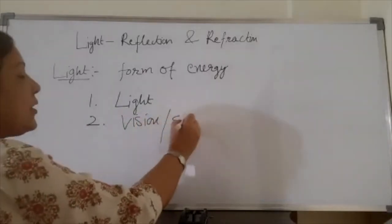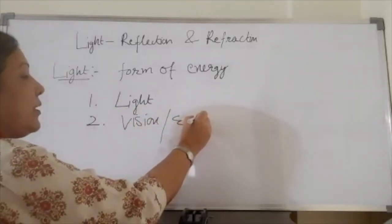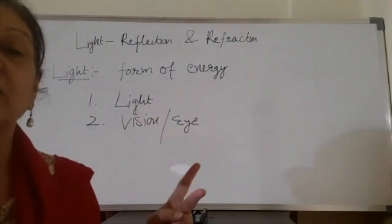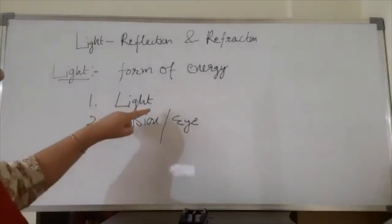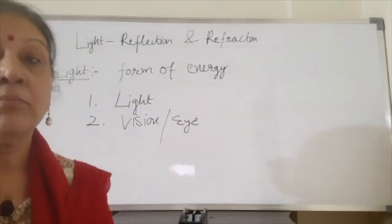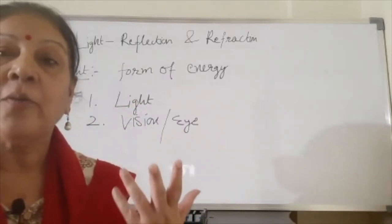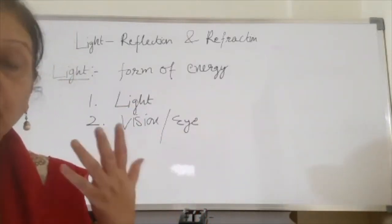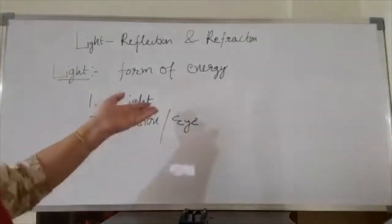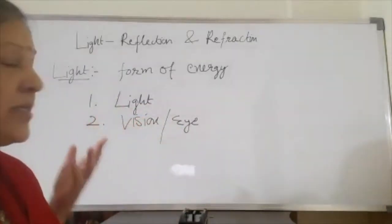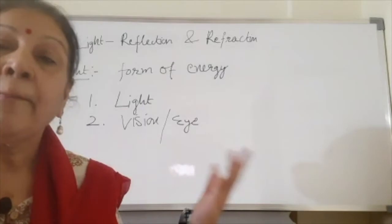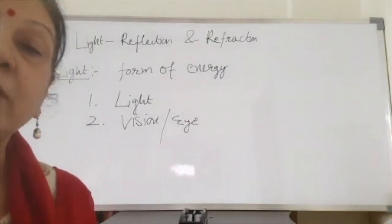So these two things are needed if we want to see any object — one is light and the other is vision or eye. Say we have light but, God forbid, someone doesn't have vision or eyes, so he will not be able to see any object. Same thing happens with vision: if we have the vision but there is no light, so the same thing happens.